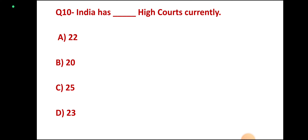Question 10: India has dash High Courts currently — 22, 20, 25, or 23? Correct answer: 25.